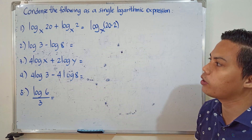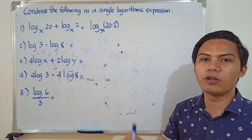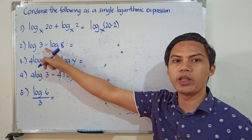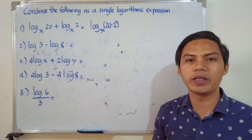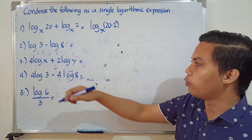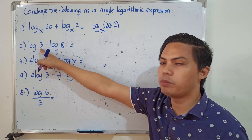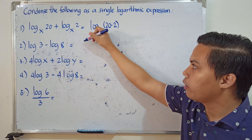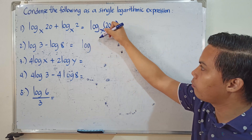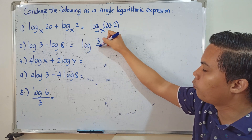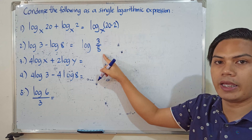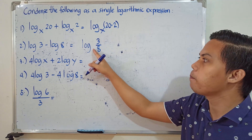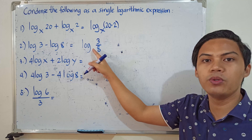Number 2: we have the logarithm of 3 minus the logarithm of 8. Since the operation is subtraction, we apply the quotient rule. The numerator is 3 and the denominator is 8, so our final answer is the logarithm of 3 over 8. This is common logarithm, meaning the base is equal to 10.